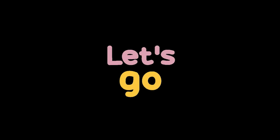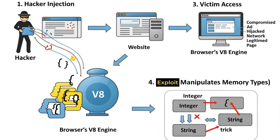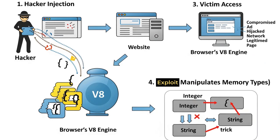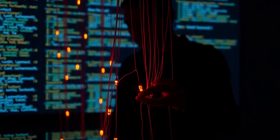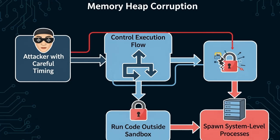Let's walk through a typical exploitation scenario. A hacker injects malicious JavaScript into a website, maybe through a compromised ad network or a hijacked legitimate page. You open that site. The browser's V8 engine tries to handle complex JavaScript objects. The exploit manipulates memory types, tricking V8 — the vulnerable component — into confusing what data type it is dealing with. This results in memory heap corruption. With careful timing, the hacker controls the flow of execution and can run code outside the sandbox, sometimes even spawning system-level processes.